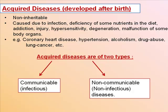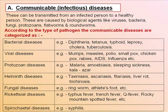Acquired diseases are of two types: communicable (infectious) and non-communicable (non-infectious). Communicable diseases can be transmitted from an infected person to a healthy person. These are caused by biological agents like viruses, bacteria, fungi, protozoans, flatworms and roundworms. According to the type of pathogen, communicable diseases are categorized as bacterial diseases — for example, diphtheria, tetanus, typhoid, leprosy, cholera, tuberculosis.